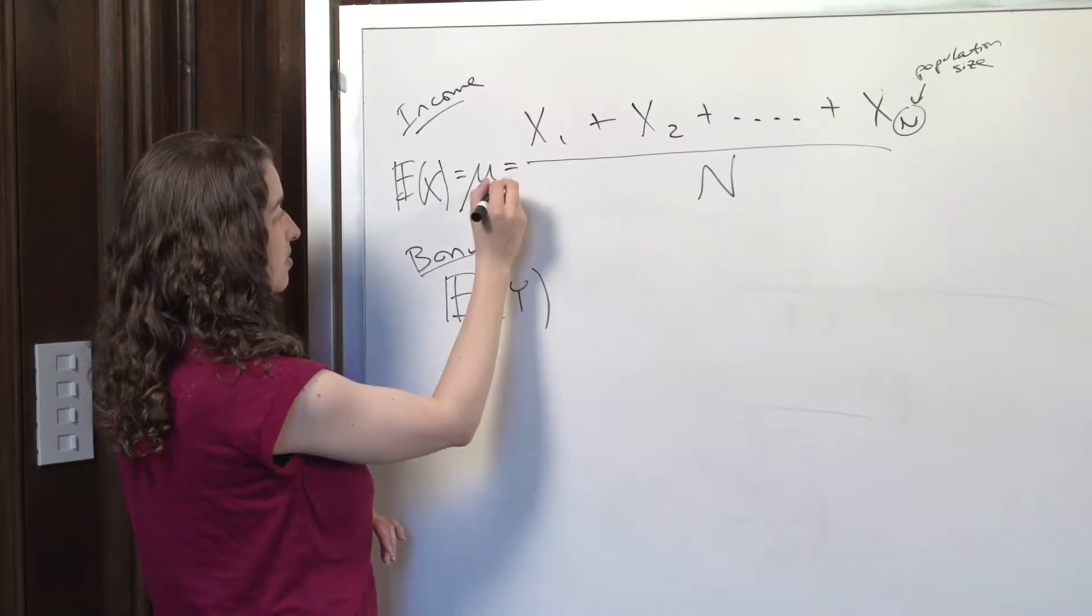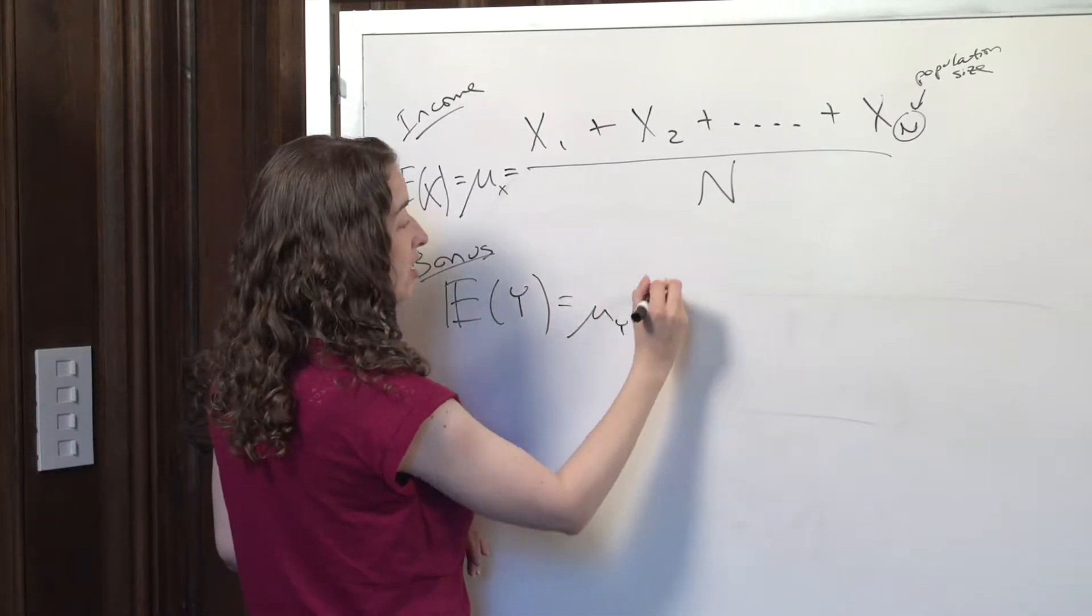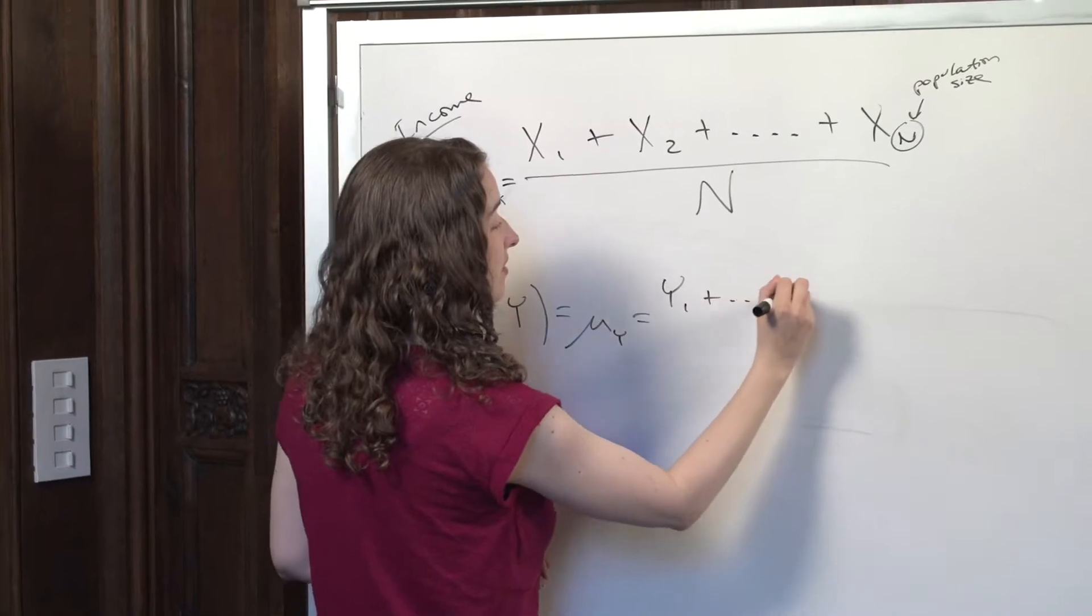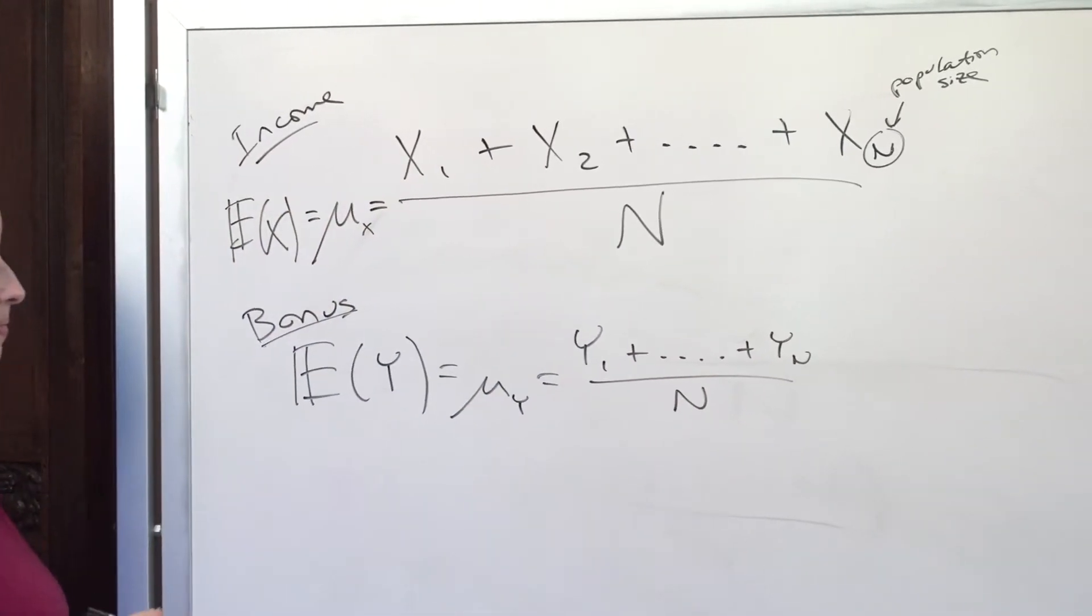And so if I use Y to represent that, I can say all the same things. This mu I'll now call mu X to be clear. Expectation of Y is something we might call mu Y. What is it? Well, it's the sum of everybody's bonuses divided by how many people, how many units there are.